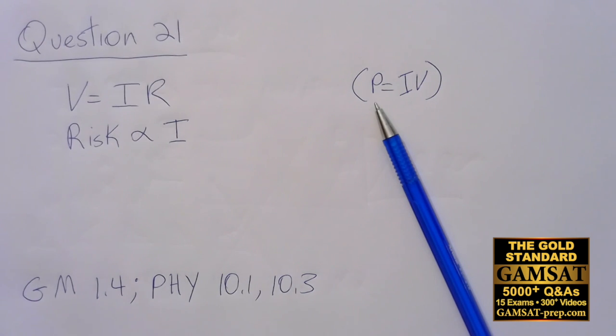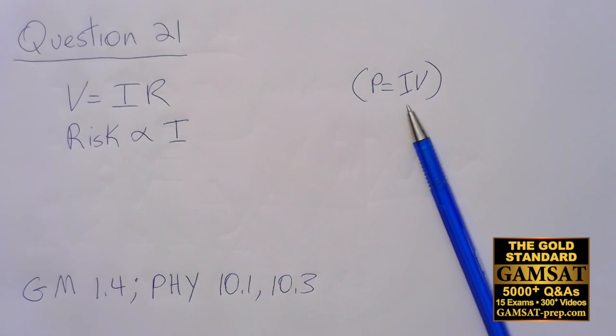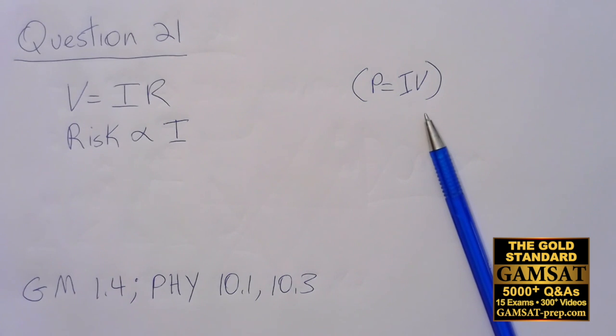A companion equation that comes up from time to time, not as often as Ohm's Law but still very important: power, which is in units of watts or joules per second, equals current times voltage. That's not necessary in this context but useful to keep in mind for some other context on the exam.